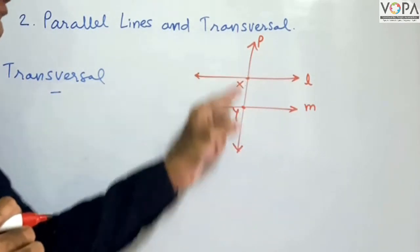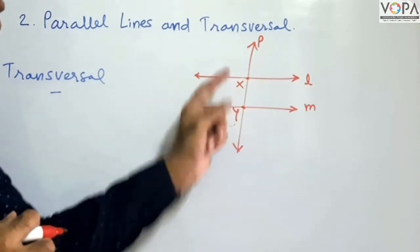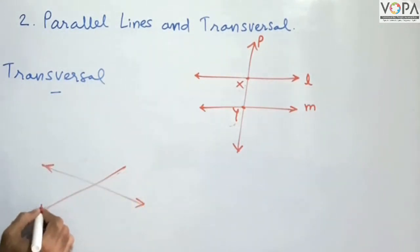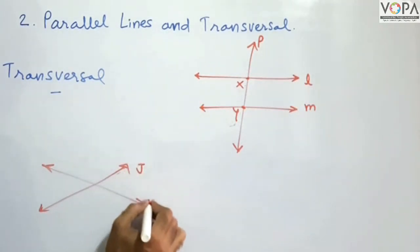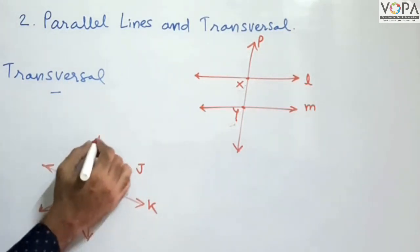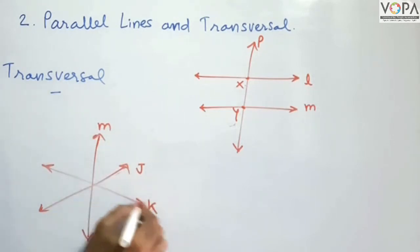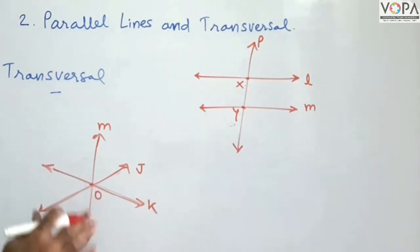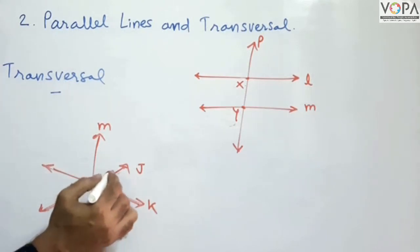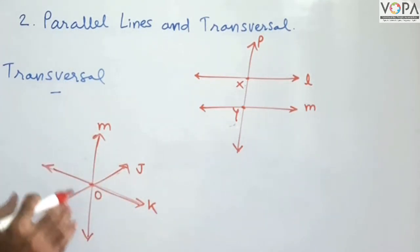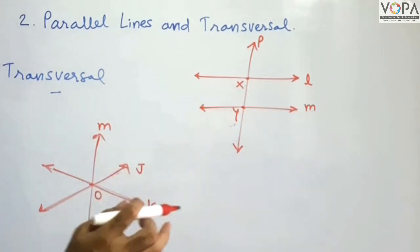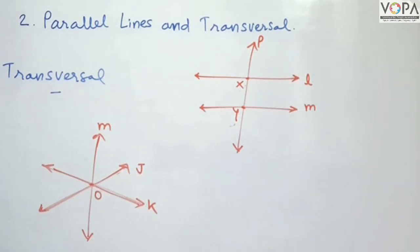The meaning of transversal is: when one line intersects two lines at different, distinct points, then that line is called the transversal line. Here I will draw an example: suppose these two lines are Line J and Line K, and this Line M is intersecting lines J and K. Now we will understand the angles made by a transversal of two lines.